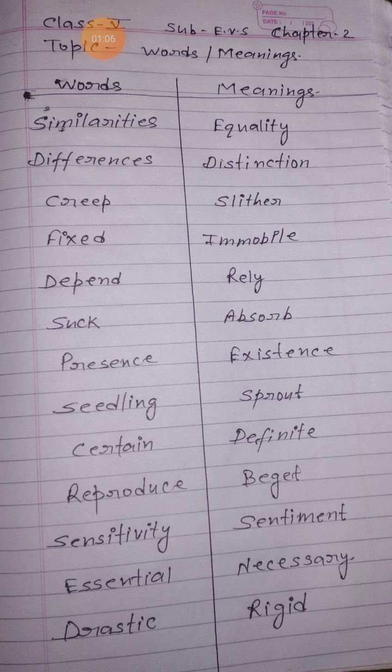Presence means existence — kisi ki maujoodgi. Seedling means sprout — ankor, jaise koi seeds se ankor nikale, that is seedling. Certain means definite, means fixed — nishchit. Reproduce means paida karna. Beget also means paida karna.